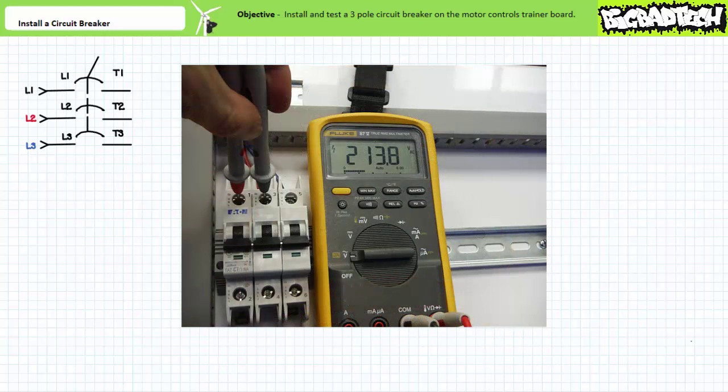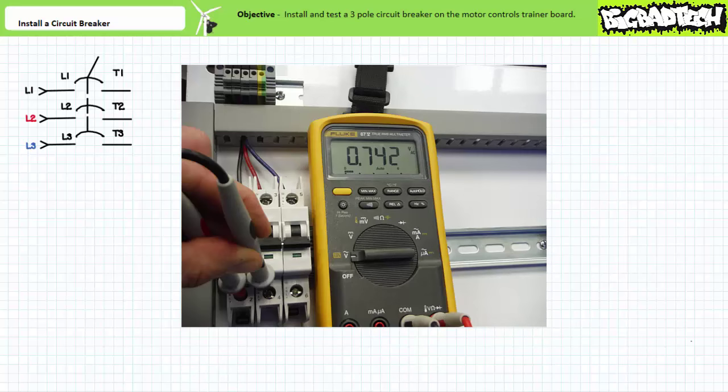When the plug is unlocked and inserted note the DMM indicates the top of the open circuit breaker is hot as expected. The DMM indicates the bottom of the open circuit breaker is cold as expected.